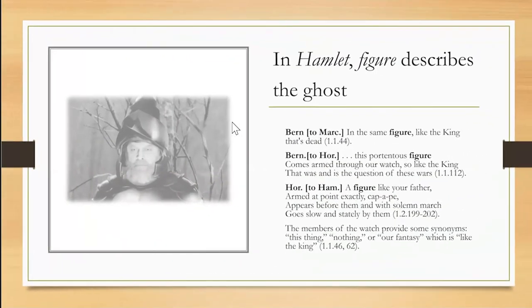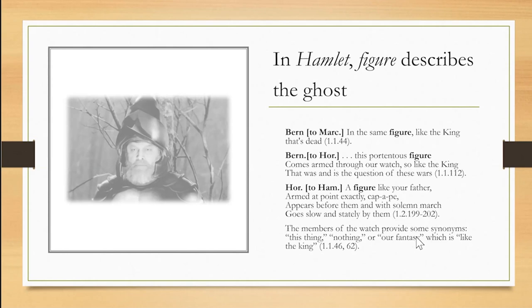In Hamlet, the word figure describes the ghost. Bernardo says to Marcellus in the first scene, 'in the same figure, like the king that's dead.' And later to Horatio, he describes the ghost as 'this portentous figure which comes armed through our watch, so like the king that was and is the question of these wars.' The word is echoed a third time when Horatio transmits the message to Hamlet, describing the ghost as 'a figure like your father, armed at point exactly, cap-a-pie. It appears before them and with solemn march goes slow and stately by.'